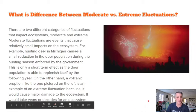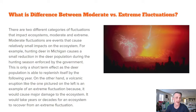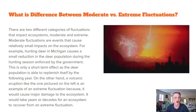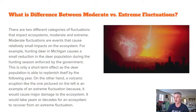On the other hand, an extreme fluctuation would be something like a volcanic eruption — the example shown in the image. It's considered extreme because it would cause major damage to an ecosystem and could take years, decades, or even centuries for the ecosystem to recover.